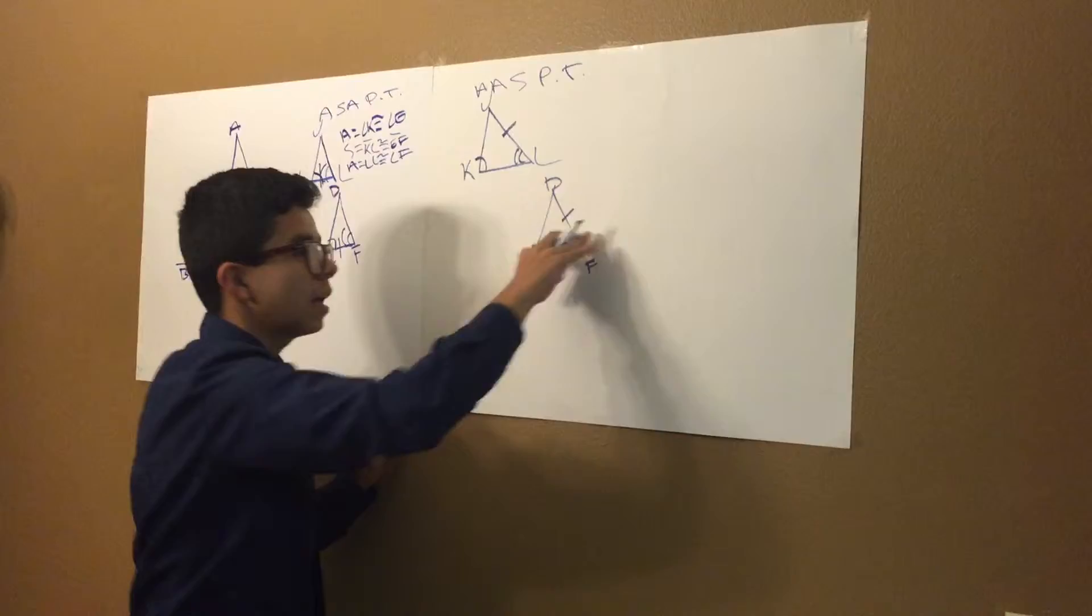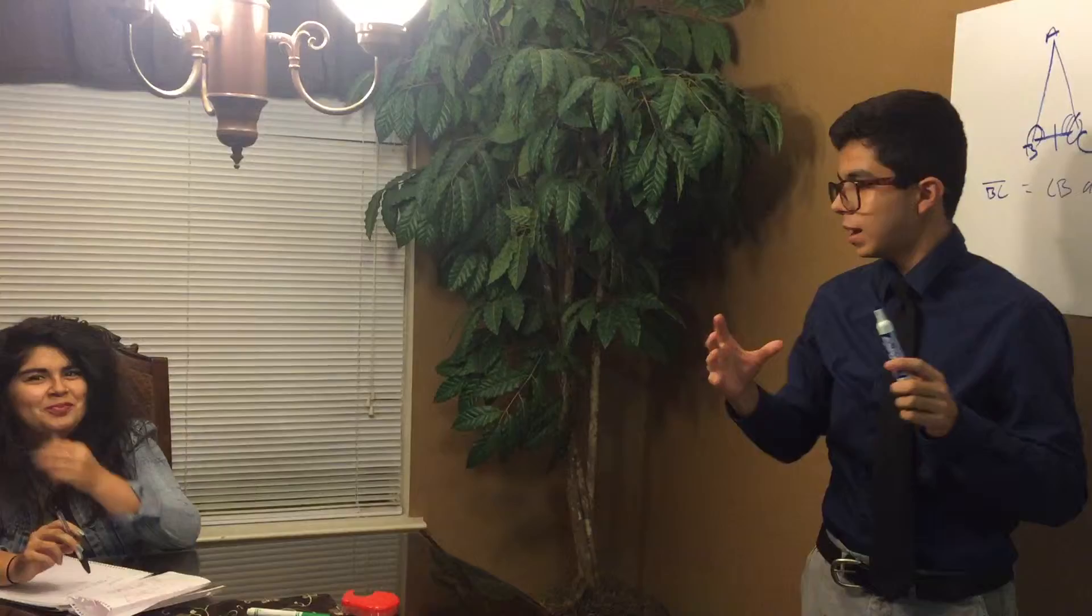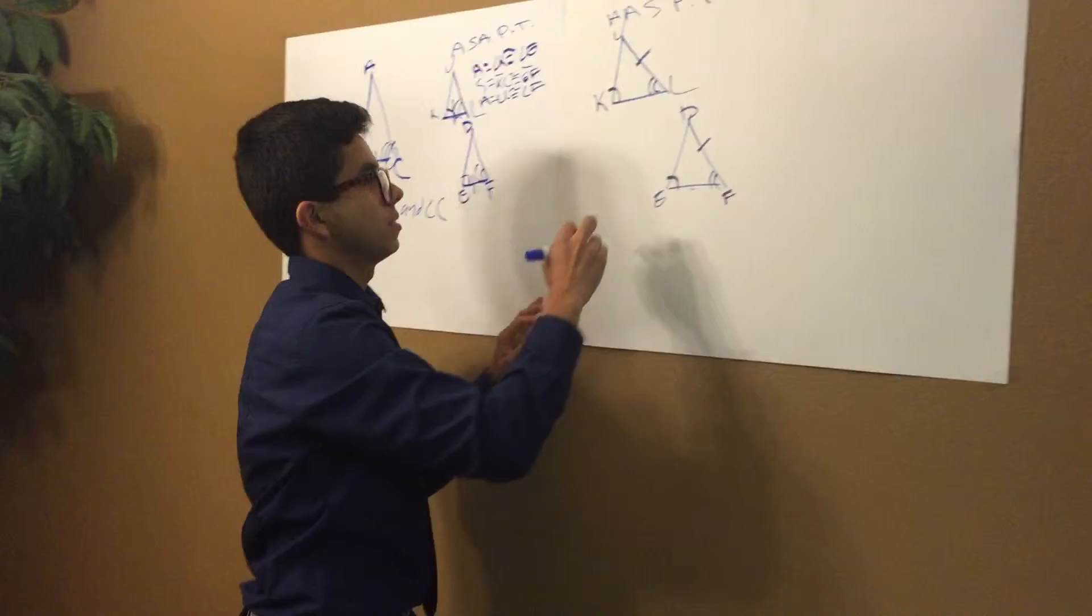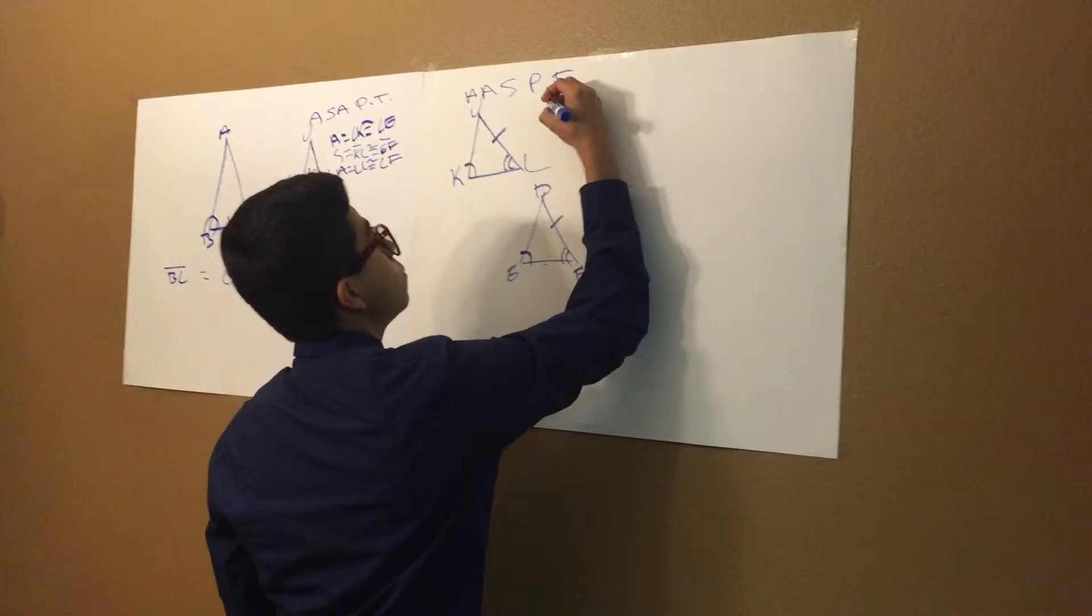Because segment JL and segment DF has to be corresponding in order for the postulate theorem to work, meaning that they have to work in order for it to be congruent. Do you understand now? Thank you, Ms. Sanchez.